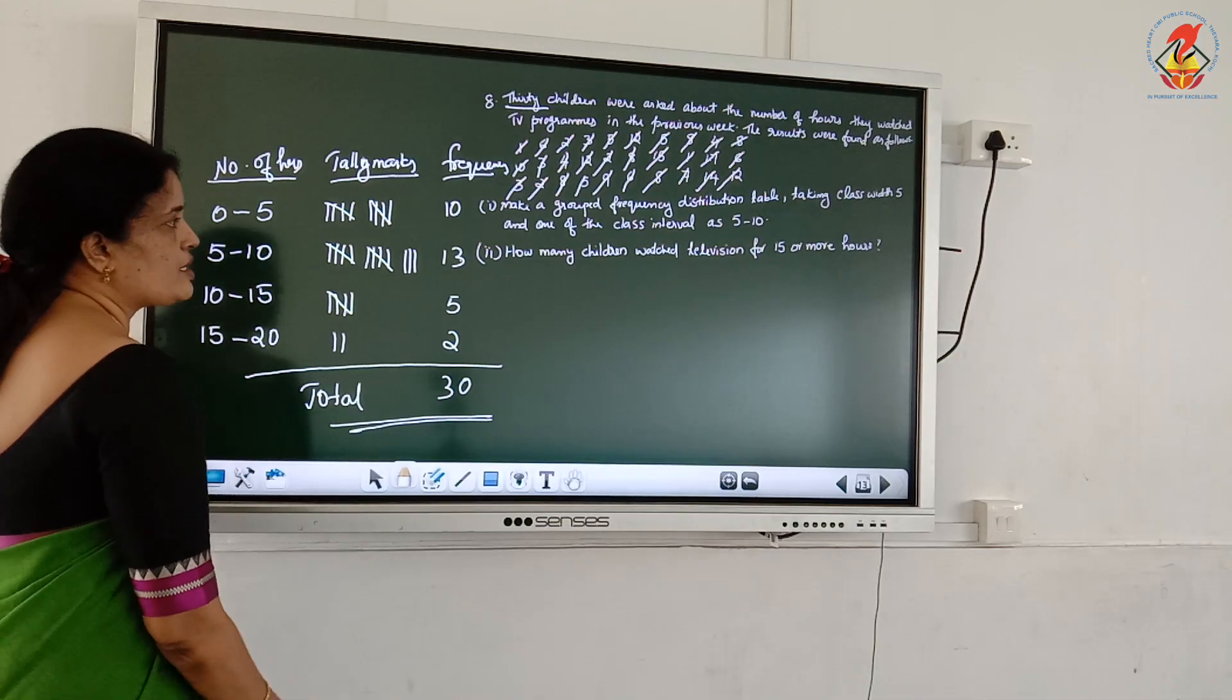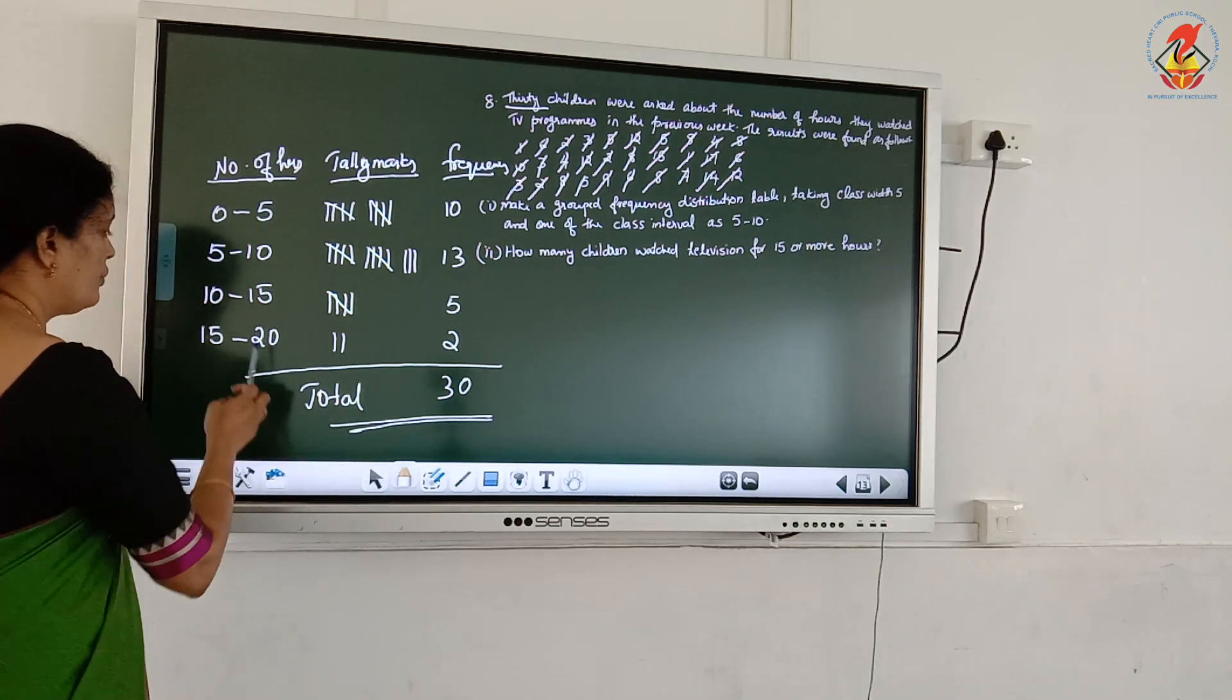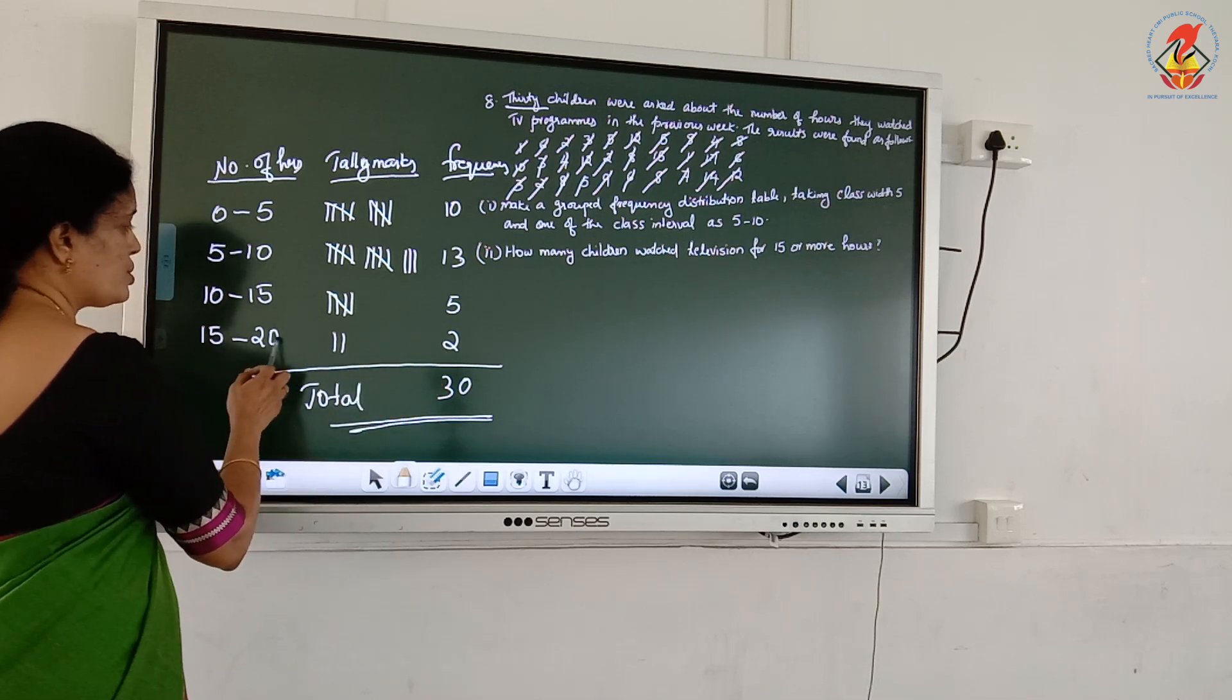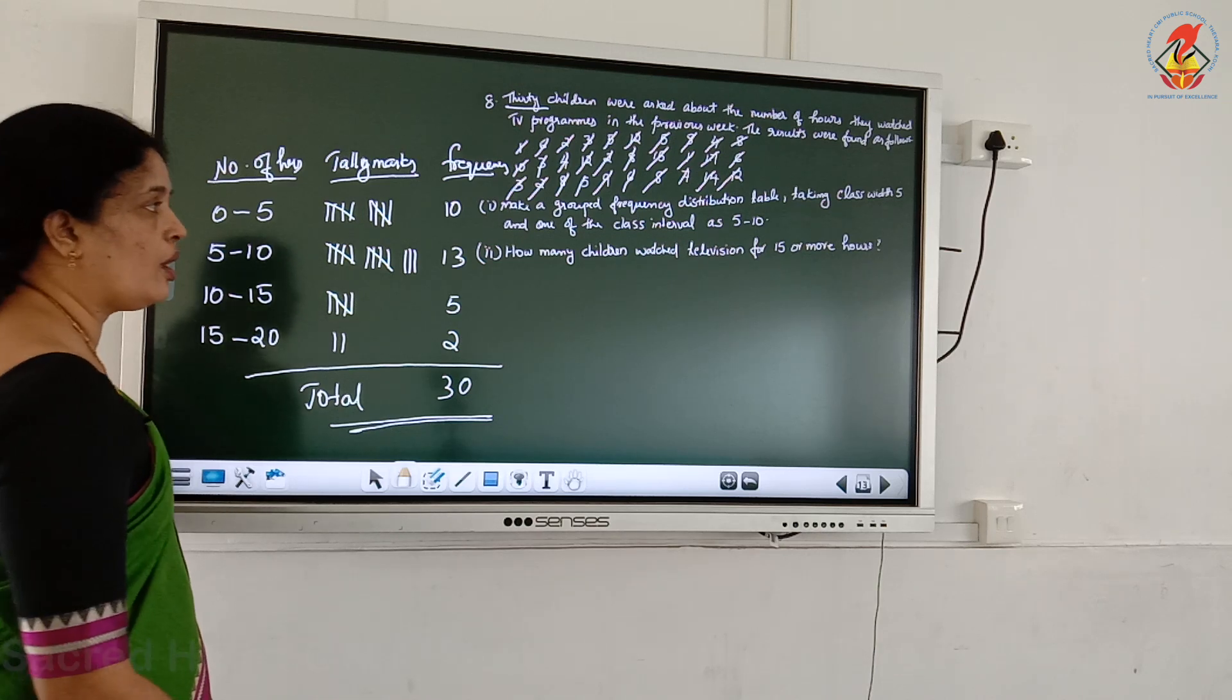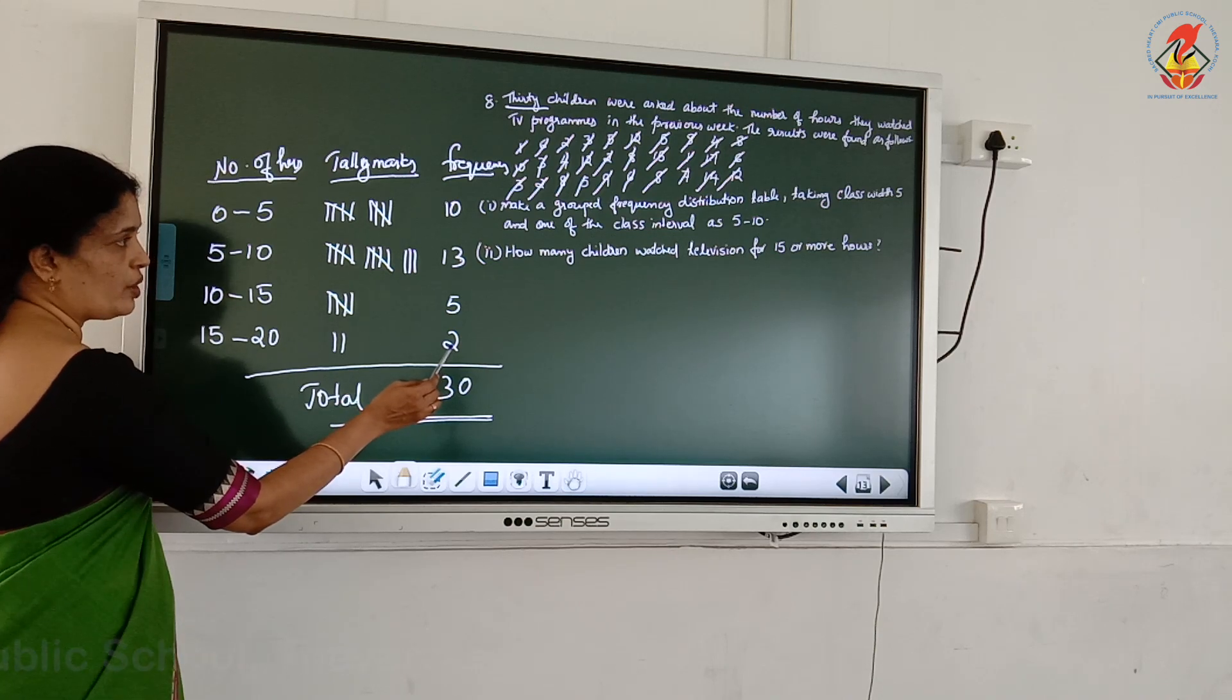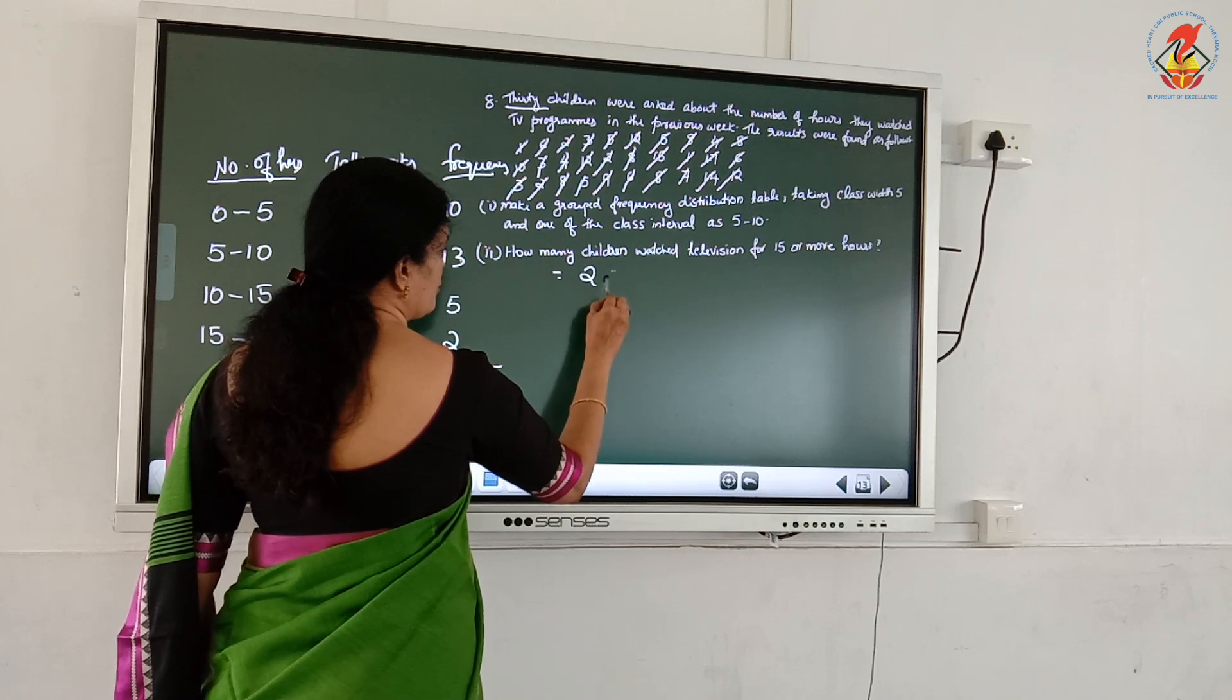How many children watched television for 15 or more hours? Here, 15 to 20, 2 children watched 15 to 20. That means 15 hours, 15 or more hours. How many children watched television? 2 children. You can write the answer, 2 children.